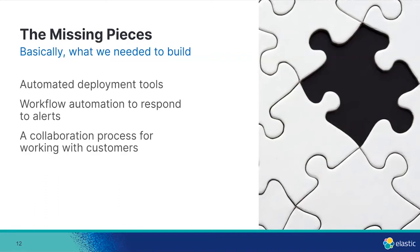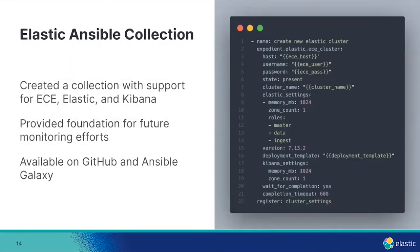The first thing we needed was automated deployment tools, then workflow automation to respond to alerts, and we needed to define what the collaboration process looks like with customers. The first piece we created was an Elastic Ansible collection — designed to support Elastic Cloud Enterprise and Kibana. It's a set of modules that let us do things like deploy clusters, configure alerts in Kibana, and add users in Elastic. This really provided the foundation for deploying everything else. This collection is available on both GitHub and Ansible Galaxy, so you can download it and use it in your own environment.